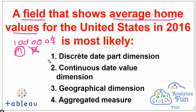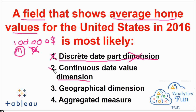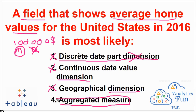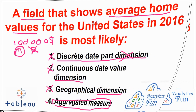Let's read through our options. Option 1 is discrete date part dimension — it is not a dimension, so option 1 is not correct. Option 2, continuous date value dimension — again a dimension, so option 2 is also not correct. Option 3, geographical dimension — again it is a dimension, so option 3 is not correct. Option 4, aggregated measure — yes, the field is a measure, so option 4 is correct.